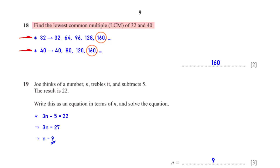Find the lowest common multiple of 32 and 40. We list the multiples of 32 and 40. From these lists we can see that the LCM of the two numbers is 160.